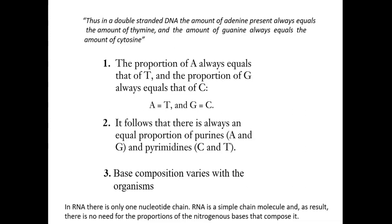The key points of Chargaff's rule are: the proportion of A always equals T, and the proportion of G always equals C — that is, A = T and G = C. It follows that there is always an equal proportion of purines to pyrimidines, meaning the amount of A and G equals the amount of C and T. Base composition may vary between organisms, but they always follow these two rules. These rules are applicable only to double-stranded DNA. In RNA, there is only a single nucleotide chain, so there is no need for proportionate distribution of nitrogenous bases, and Chargaff's rules do not apply to RNA or single-stranded DNA.